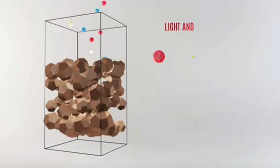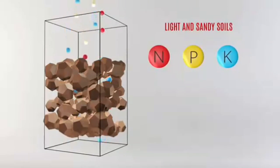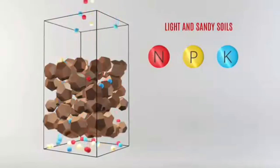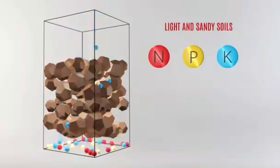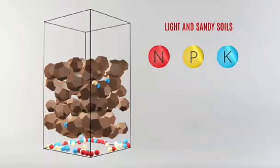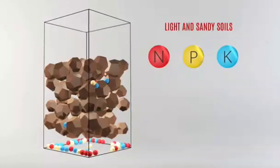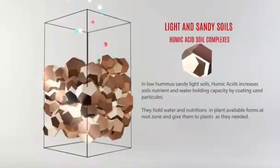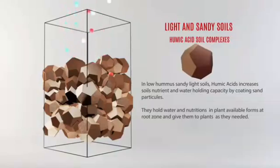In low humus sandy-light soils, humic acids increase the soil's nutrient and water-holding capacity by coating sand particles. They hold water and nutrition in plant-available forms at the root zone and provide them to plants as needed.